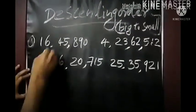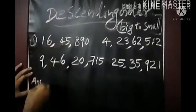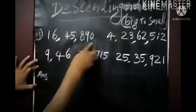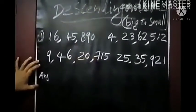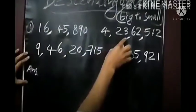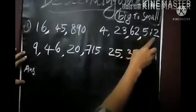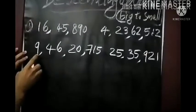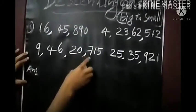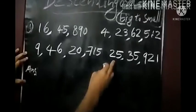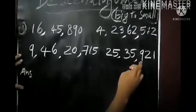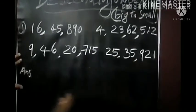OK, listen here. The next example numbers are: 16,45,890 — second number 4,23,62,512 — next 9,46,20,715 — and next 25,35,921.